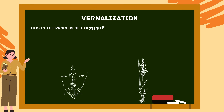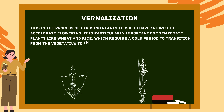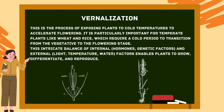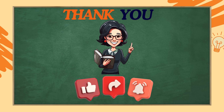Vernalization is the process of exposing plants to cold temperatures to accelerate flowering. It is particularly important for temperate plants like wheat and rice, which require a cold period to transition from the vegetative to the flowering stage. This intricate balance of internal hormones, genetic factors, and external light, temperature, and water factors enables plants to grow, differentiate, and reproduce. Thanks for watching — notes will be dropped in the description. If you found this video helpful, please like, subscribe, and share.